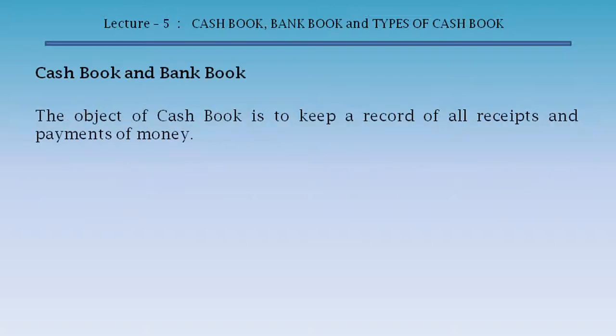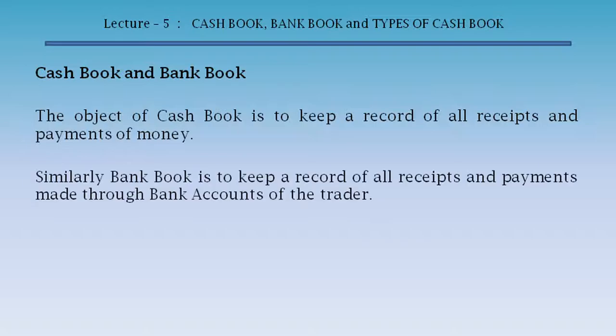The object of cash book is to keep a record of all receipts and payments of money. Similarly, bank book is to keep a record of all receipts and payments made through bank accounts of the trader.